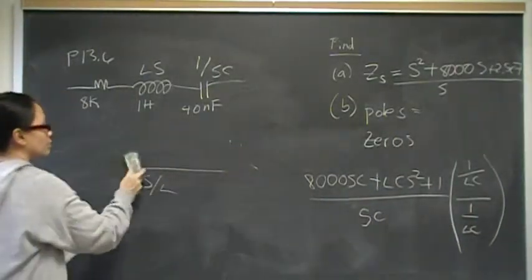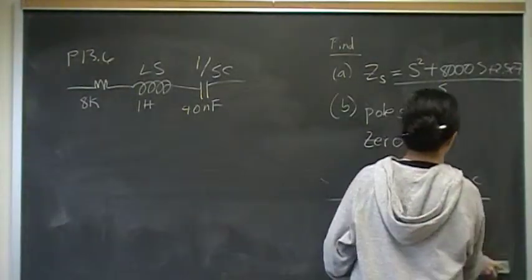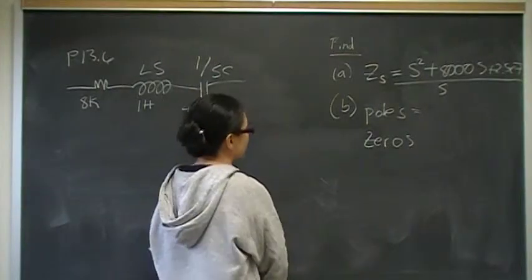For part B, zeros and poles. To find poles, that's easy. You have a pole when the denominator is zero, and that is at zero.